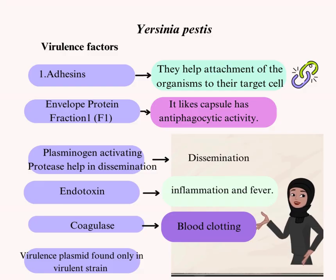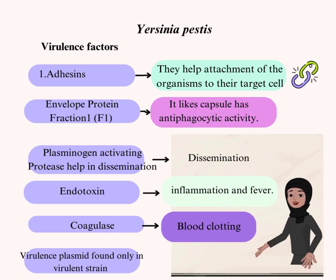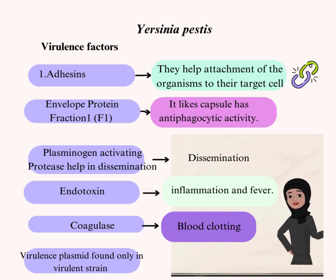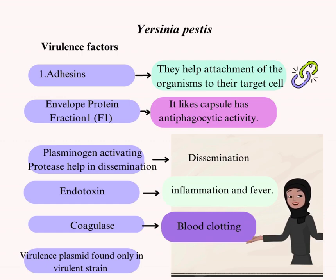Virulence factors of Yersinia pestis: Adhesins help attachment of the organisms to their target cell. Envelope protein. Fraction 1 antigen. Virulence plasmid found only in virulent strains. Endotoxin induces inflammation and fever.